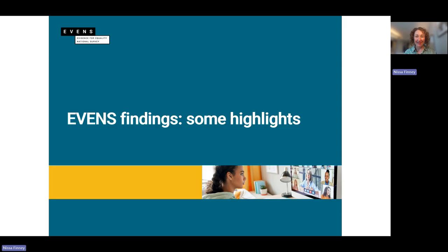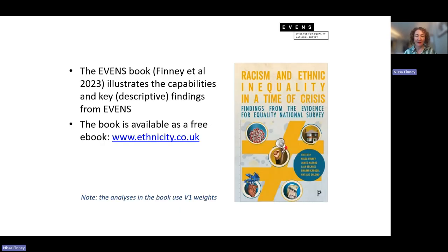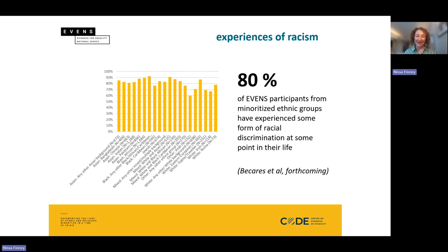Let's see the kinds of work that can be undertaken with this data. You can find out a lot more about the results and possibilities in the EVANS book, available on the CoDE website ethnicity.co.uk as a free ebook — a thematically organised book presenting findings from the EVANS survey on ethnic inequalities. On experiences of racism, a headline result is that 80% of EVANS participants from minoritised ethnic groups have experienced some form of racial discrimination. No other dataset can really give us this kind of information, and it really emphasises that racism is the common experience of ethnic minorities in Britain.